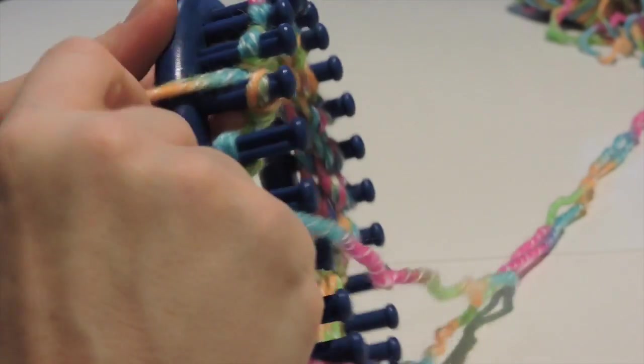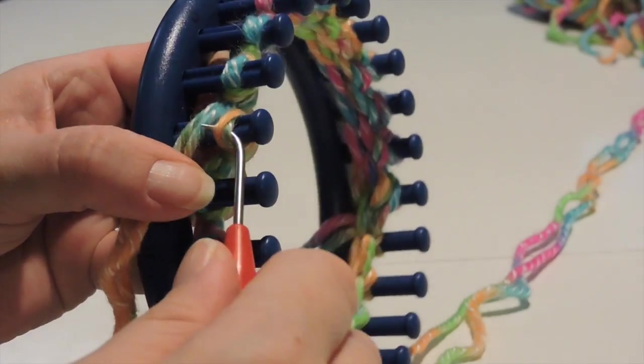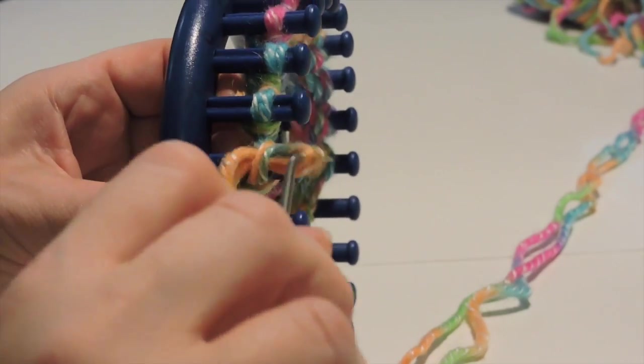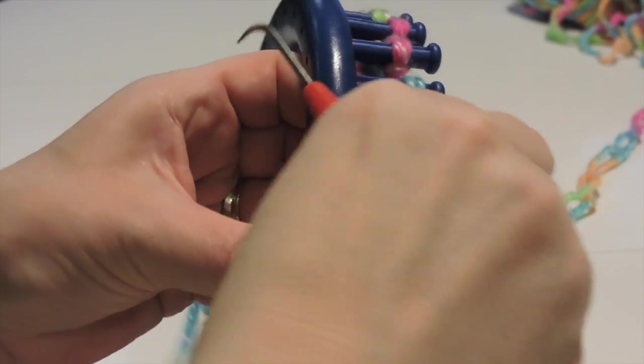Again, we're going to continue doing the knit one, purl one for six rows. So again, six rows of knit one, purl one, and we are creating the cuff by doing this, the cuff of the mitten.